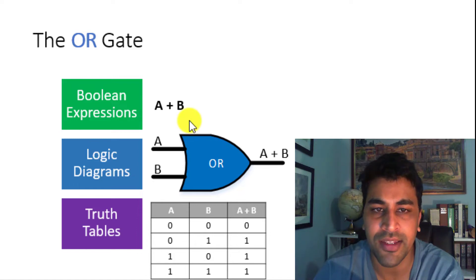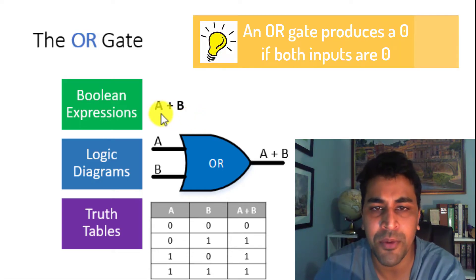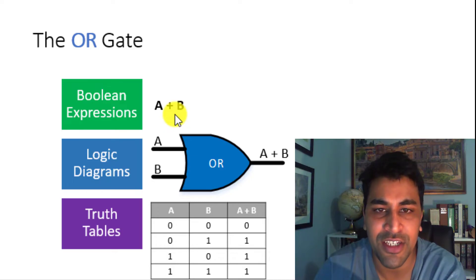Let's move on to the OR gate. The OR gate produces a 0 if both inputs are 0, and 1 otherwise. This is the Boolean expression for the OR gate. Notice how the OR gate resembles the addition symbol in algebra. However, in Boolean algebra, this represents the OR symbol. This is the logic diagram for the OR gate. The truth table shows that both inputs have to be 0 for the output to be 0, and any other case would result in a 1 output.